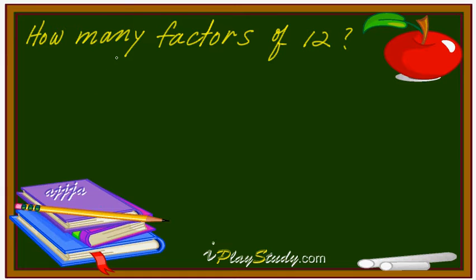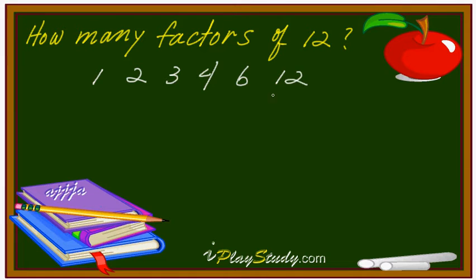I'm going to write all those factors. So, 1, 2. What about 3? That's right, divide by 3 is possible. What about 4? What about 5? No. What about 6? That's right. 7, 8, 9, 10, 11, 12 — that's right, 12 is also a factor.